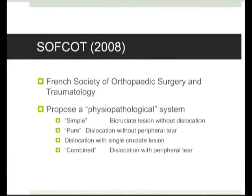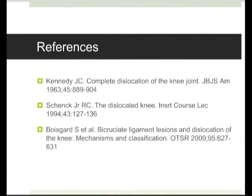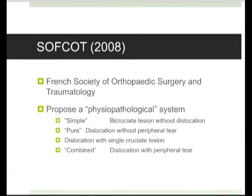This was a simple system looking at multiligament injury rather than just dislocations. They said bicruciate injury without dislocation is one category. Then dislocation without cruciate injury, or dislocation with only a single cruciate injury, or combined dislocation with both cruciates. Their point is that other classification systems for dislocations have excluded knees that were not actually seen dislocated, and they're trying to include multiligament injured knees that came in already reduced.